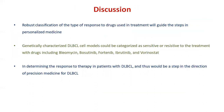The proposed classification of type of response to drug used in treatment will guide steps in personalized medicine. In this project, genetically characterized DLBCL cell models could be categorized as sensitive or resistive to treatment with drugs including bleomycin, positinib, fortinib, ibrutinib, and vorinostat. This would help in determining the response to therapy in patients with DLBCL and represents a step toward precision medicine for DLBCL.